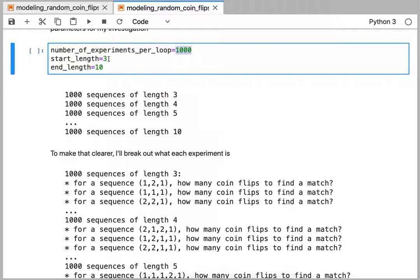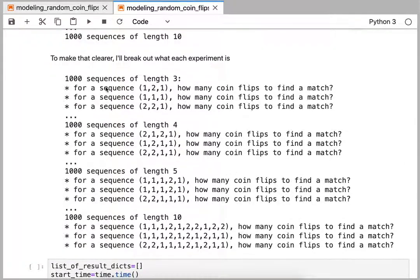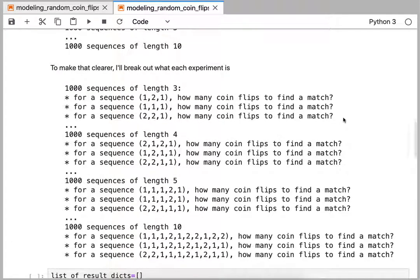So that's three, four, five, six, seven, eight, nine, ten. So this is basically the investigation that I want to set up: how many coin flips does it take to match various sequence lengths? Okay, so now that we have the experimental design in mind, now we have to code that up in Python.